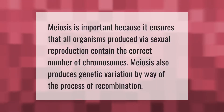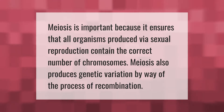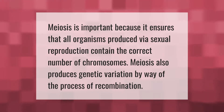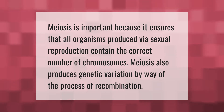Meiosis is important because it ensures that all organisms produced via sexual reproduction contain the correct number of chromosomes. Meiosis also produces genetic variation by way of the process of recombination.